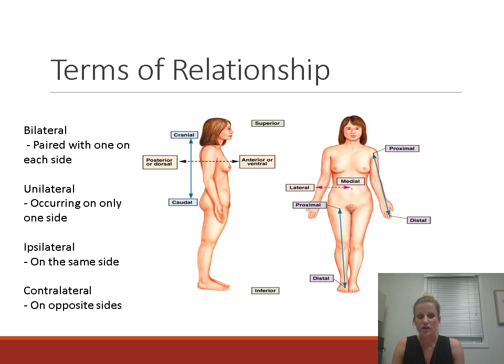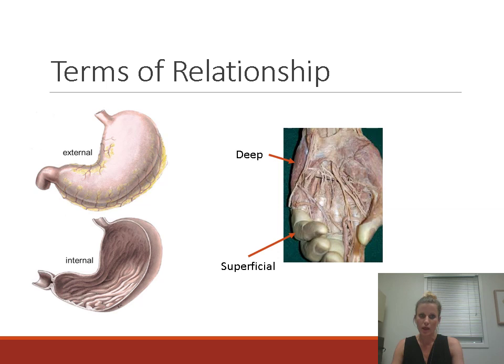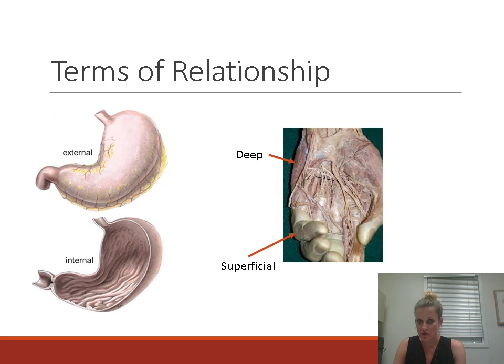External is the outside; internal is the inside — here you can see the inside of the stomach with all the rugae or folds in the mucosa. Deep and superficial: superficial is towards the surface — the skin is superficial. Once you pull that off, everything is deep. In this case, the arrow points to the muscles, which are deeper than the skin.